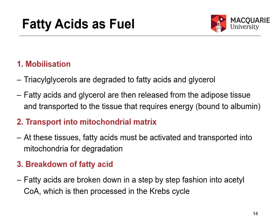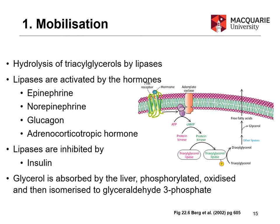Now let's look at fatty acids as a fuel source. There are three major steps: first, we need to mobilize fatty acids out of fat stores; second, transport them into the mitochondrial matrix; and third, break them down there. The acetyl-CoA produced can then be processed through the Krebs cycle, as covered in a previous video.